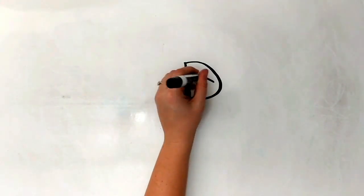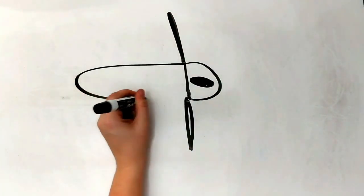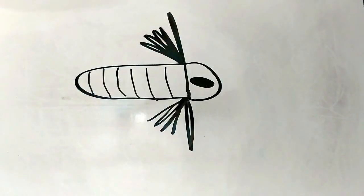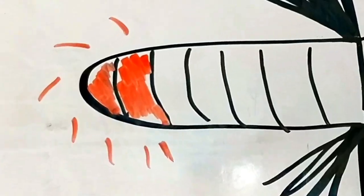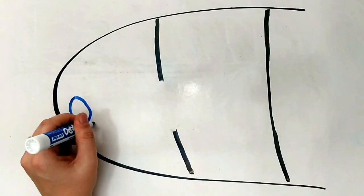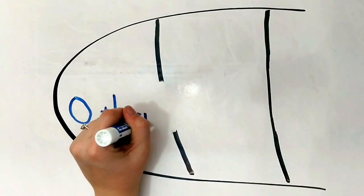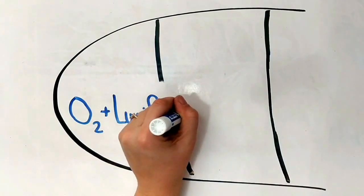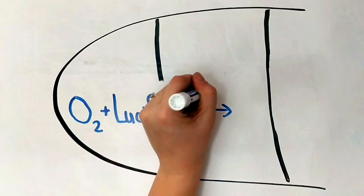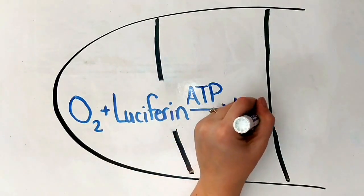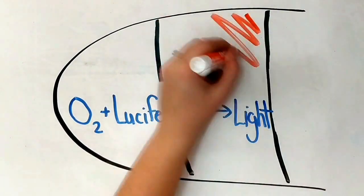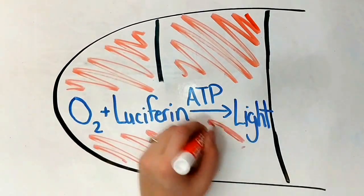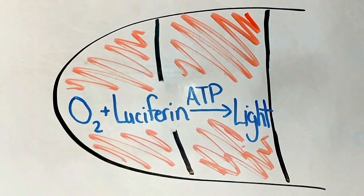We have talked about why they glow, but not yet about how they glow and how amazingly efficient they are. The glow that you see comes from the light organs at the end of the abdomen. When oxygen mixes with luciferin in the presence of cell energy, or ATP, light is produced. But this light is the most efficient light known at nearly 100% of the energy being used turned into light and with very little heat emitted.